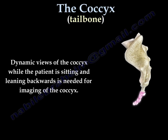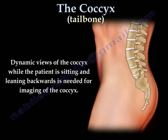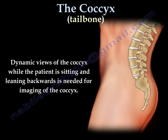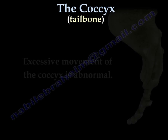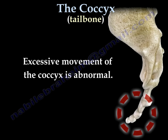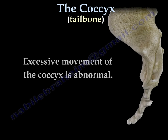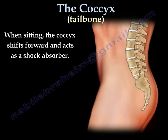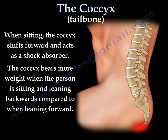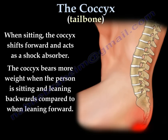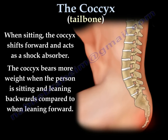Dynamic views of the coccyx when the patient is sitting and leaning backwards is the best way to image the coccyx. We compare these x-rays to non-weight bearing films with the patient standing or lying to the side. Excessive movement of the coccyx is abnormal. The coccyx is a shock absorber — when sitting, it shifts slightly forward. The coccyx bears more weight when the person is sitting and leaning backwards compared to leaning forward.